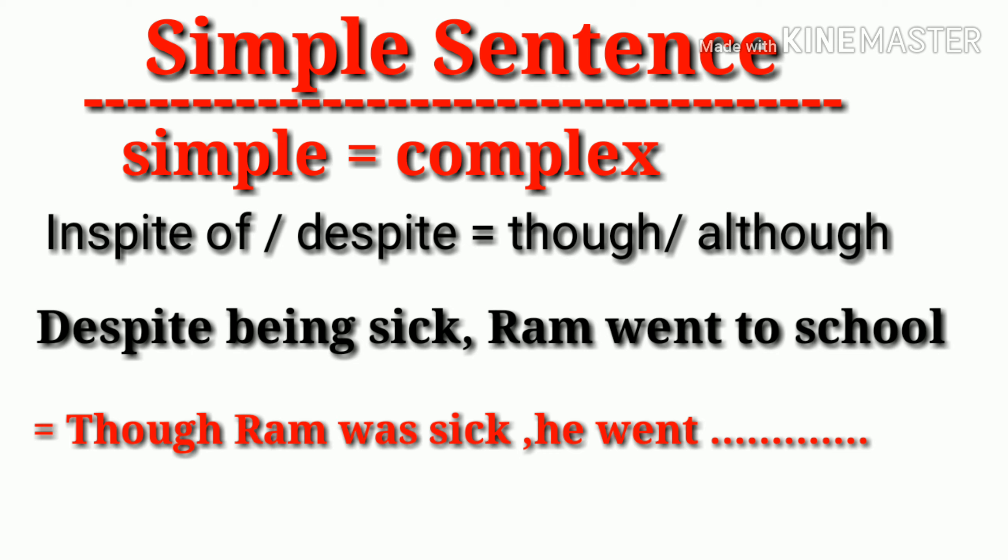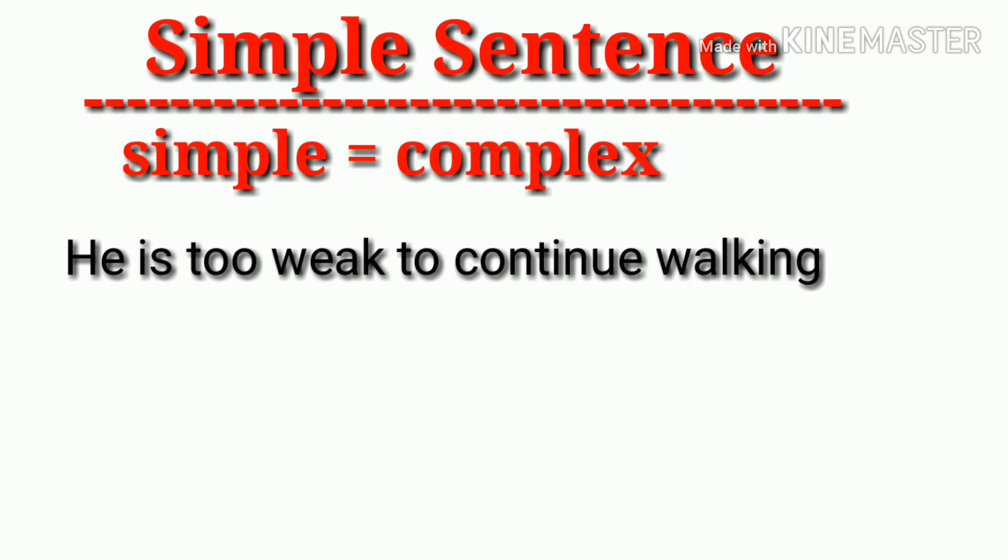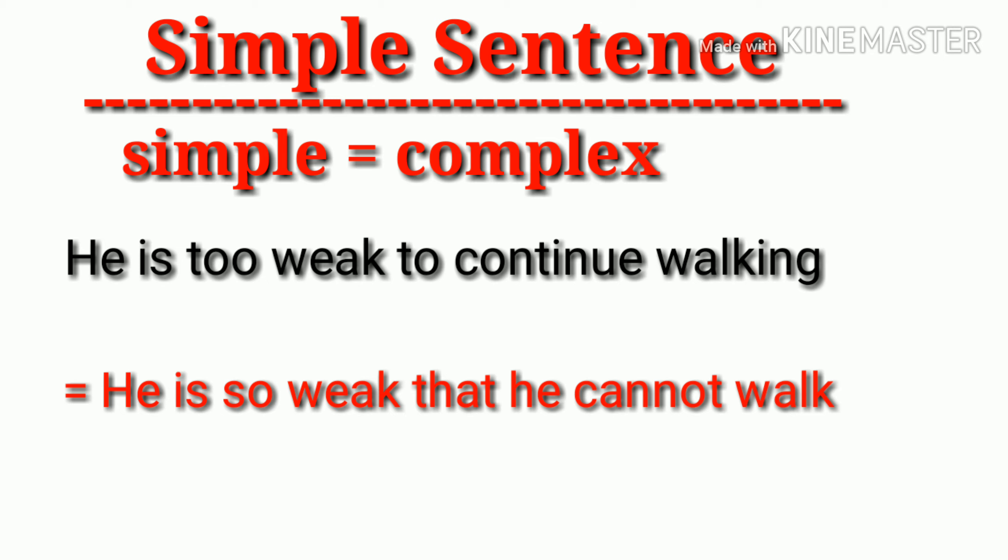Next, 'he is too weak to continue walking'. Remember, when you see 'too' in a sentence, you convert it like this: 'he is so weak that he cannot walk'. Thank you guys.